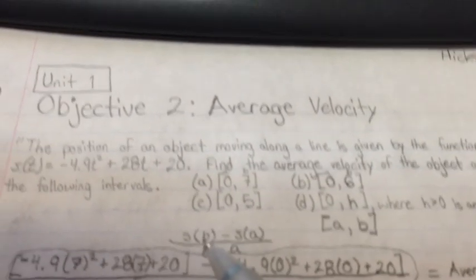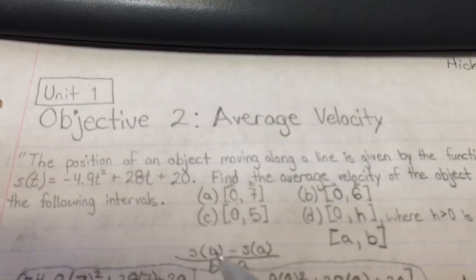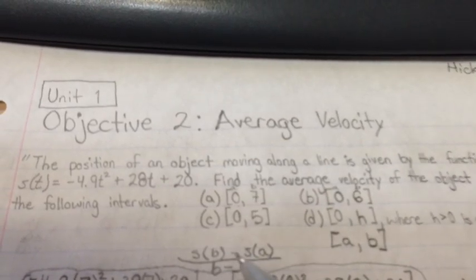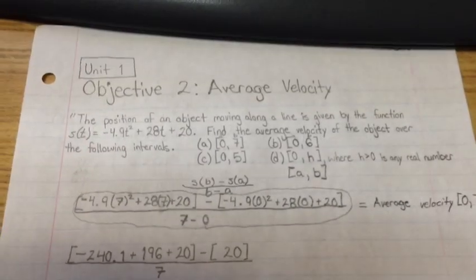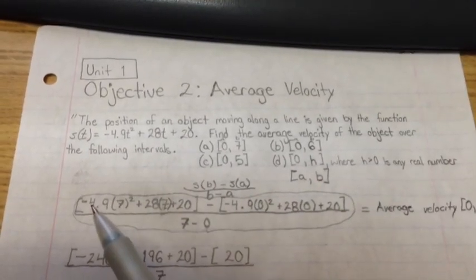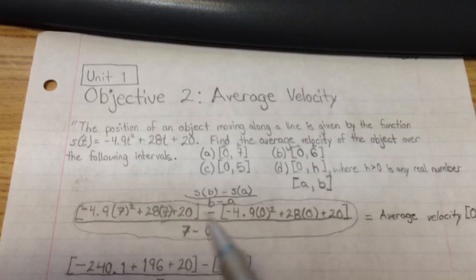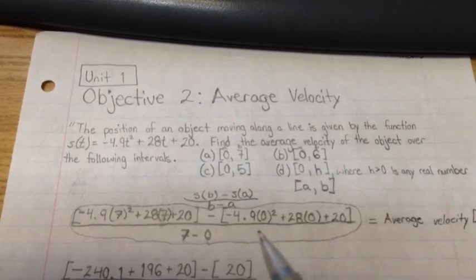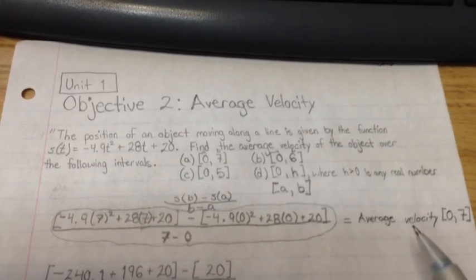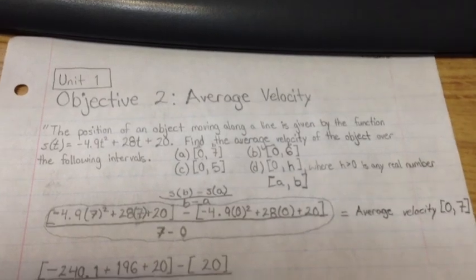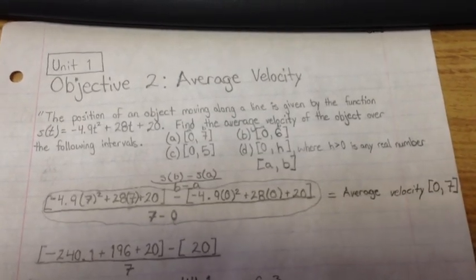So you basically just put that in the function, the function of that number minus the function of that number. So there it is. So if we plug that number in, this is the long, drawn-out thing that we get, and that will equal the average velocity of that interval.